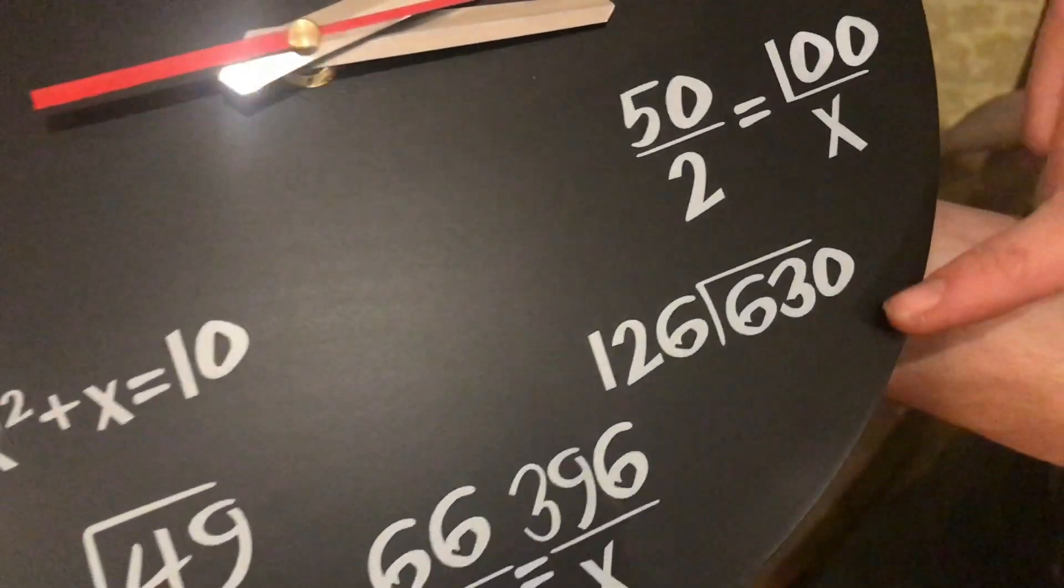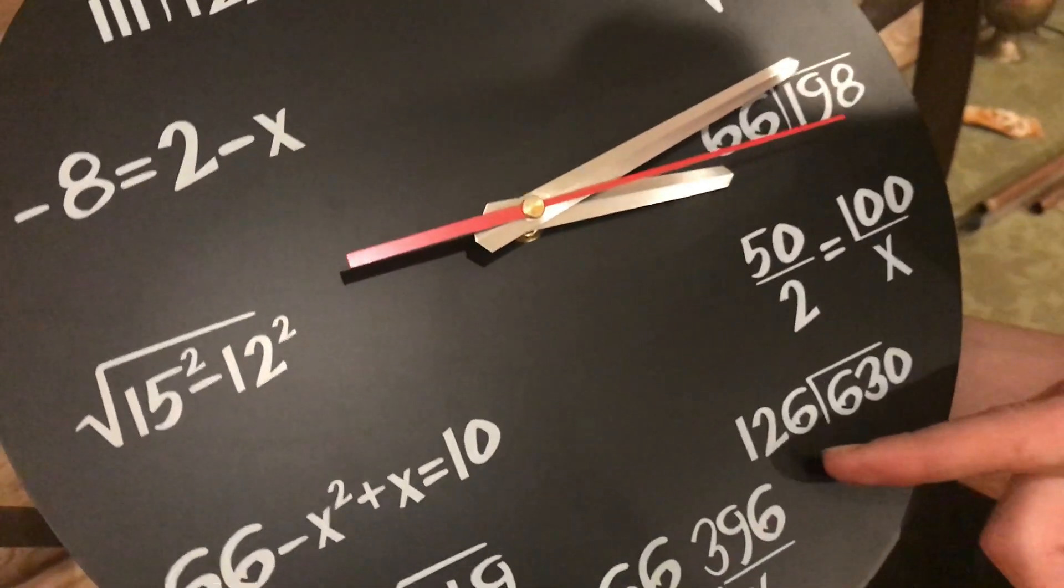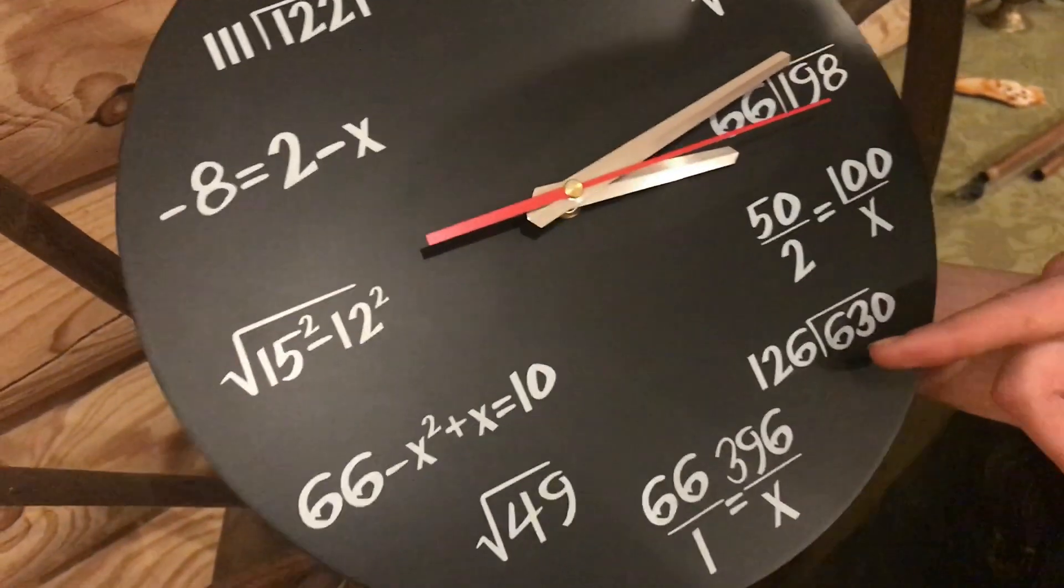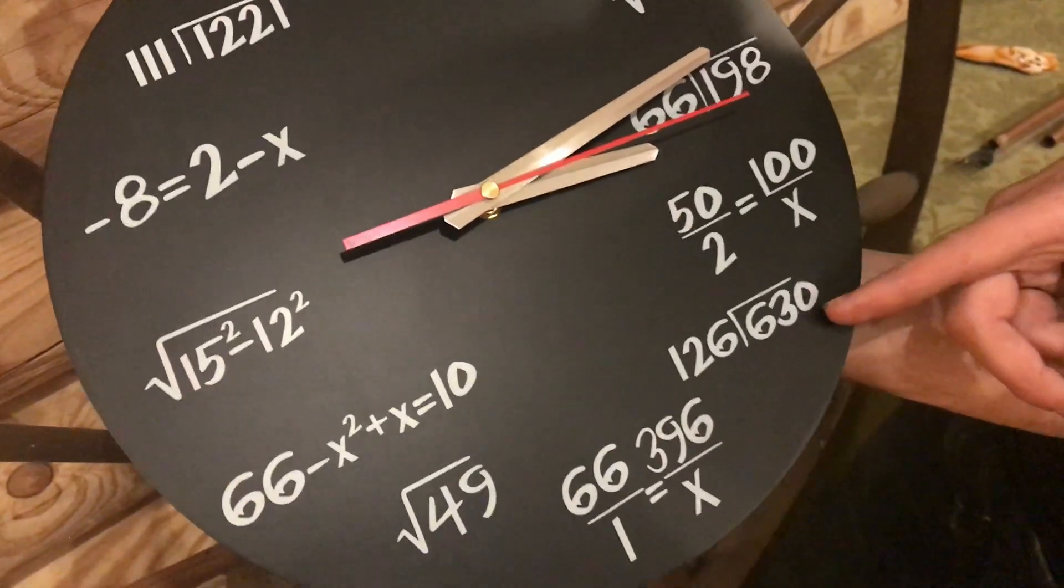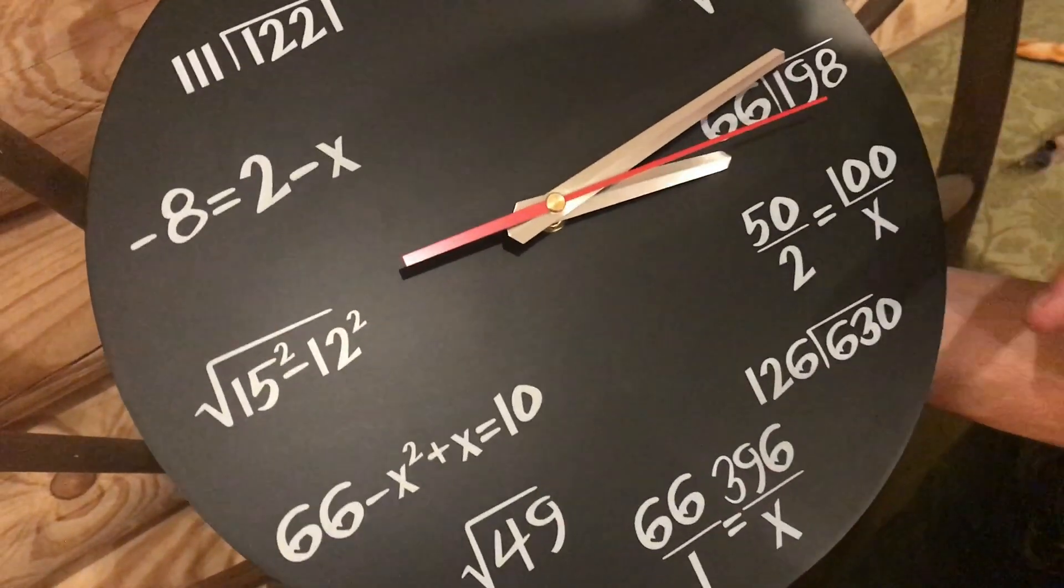This one, similar to up here, just 5 times 126 will give you 630. So 630 divided by 126 is 5.